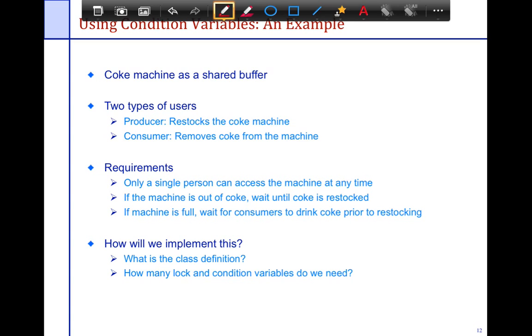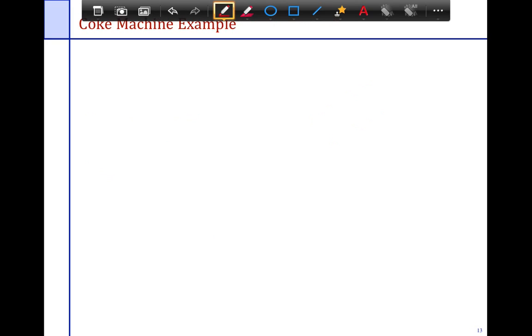So let's try to solve the producer-consumer using a conditional variable. And so we're going to look at the coke machine as an example of a shared buffer. We're going to have a producer that restocks the machine. We have a consumer that removes coke from the machine. Only a single person can access the machine at any given time. If the machine is out of coke, wait until the coke is restocked. The machine is full, wait until the consumer is doing coke.